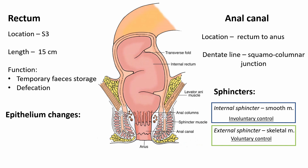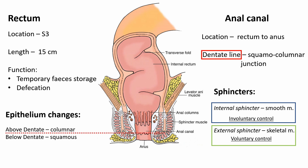The epithelium changes are important in regards to anal cancer, as they help determine resection margins for the surgeon. The dentate line is an important squamocolumnar junction differentiating the outside from the inside. Above the dentate line we have columnar epithelium; below the dentate line we have stratified squamous epithelium; and beyond the anus we have keratinized squamous epithelium.